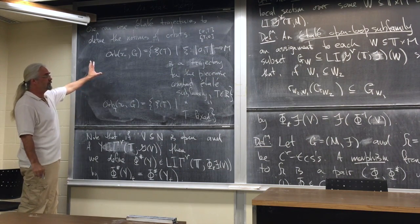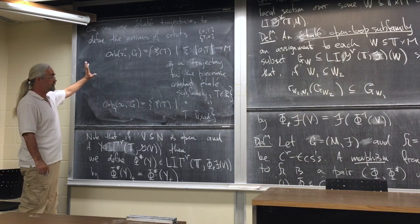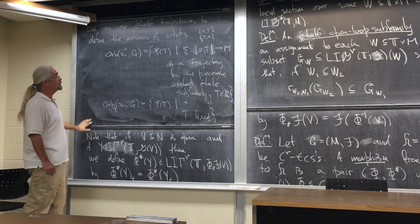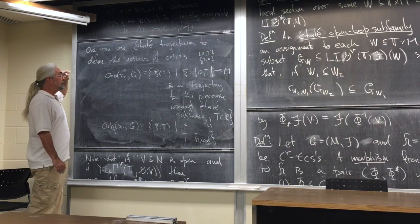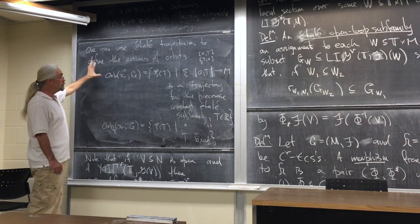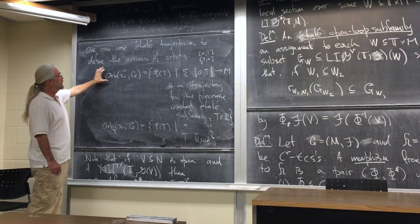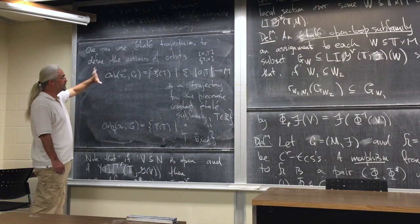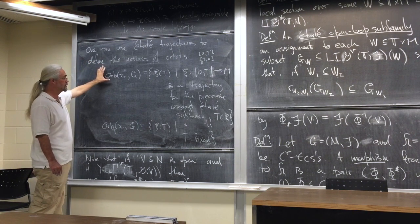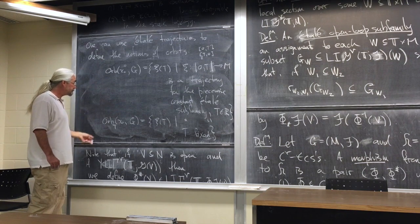All the standard theorems you know about orbits apply here — in particular Sussman's theorem: for smooth or analytic systems, orbits are smooth or analytic immersed submanifolds with a bit more structure. In the analytic case, the tangent spaces of the orbits are computed by taking germs of vector fields from F, taking their Lie brackets, evaluating via the stalk evaluation map — the span of all such things gives the tangent space of the orbit.